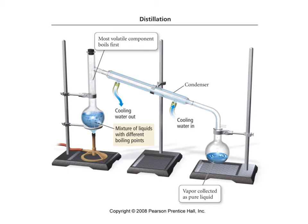The temperature stays steady during the process. Once all the ethanol has boiled off, the temperature shoots up to 100°C as water starts to boil. You can stop the experiment there, remove your flask of ethanol, and replace it with a clean flask to collect purified water as well. It's a way to purify both liquids — a very fun technique that you'll set up yourself in the organic chemistry lab.